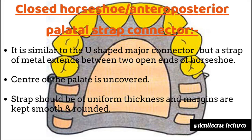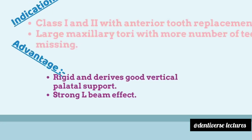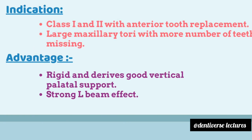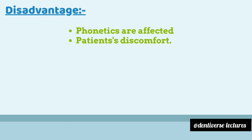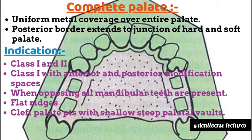Fifth type is the closed horseshoe or anterior-posterior palatal strap. It is similar to the U-shaped major connector, but a strap of metal extends between the two open ends of the horseshoe. The center of the palate is uncovered. The strap should be of uniform thickness and margins are kept smooth and rounded. Indications are class 1 and 2 with anterior tooth replacement, and in cases of large maxillary tori with a greater number of teeth missing. Advantages: it is rigid and derives good vertical support with a strong L-beam effect. Disadvantages: phonetics are affected and patient discomfort.